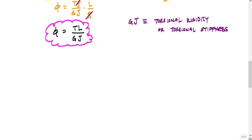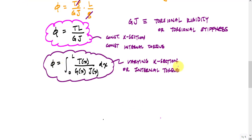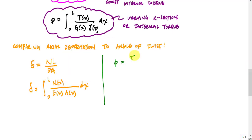This formulation for angle of twist is good for constant cross sections and constant internal torque. And when you have a variable like a tapered cross section or a distributed load, then we're going to want to use an integral formulation like this. Now, the process of using this angle of twist formulation is, in fact, very similar to axial deformation.